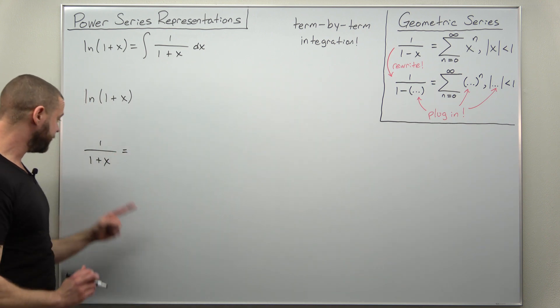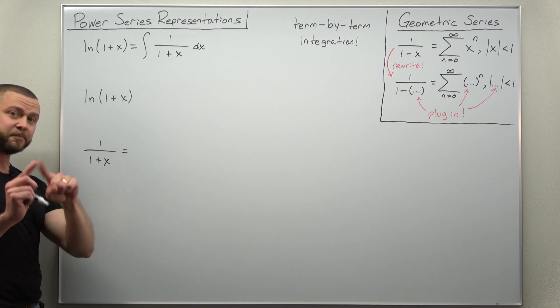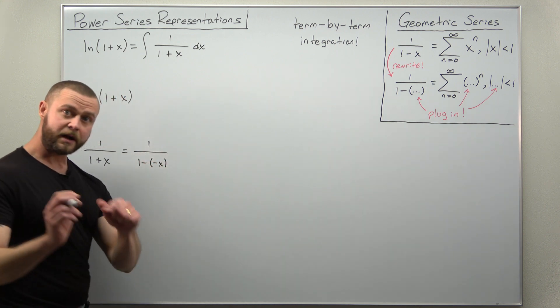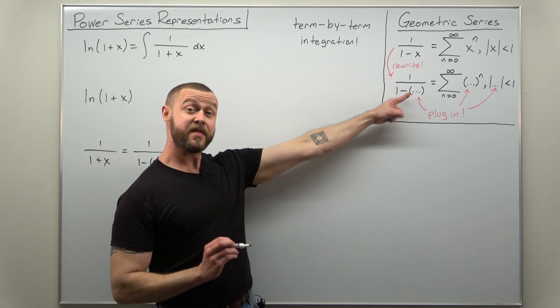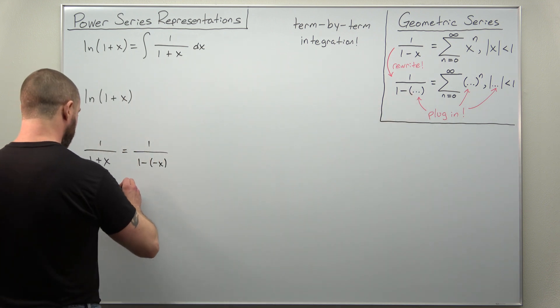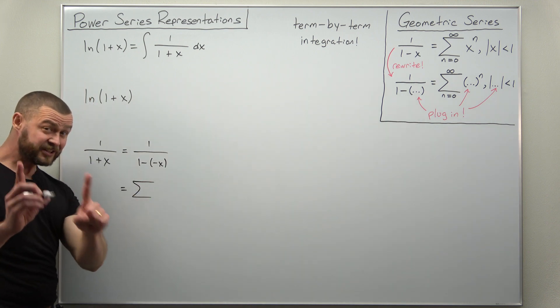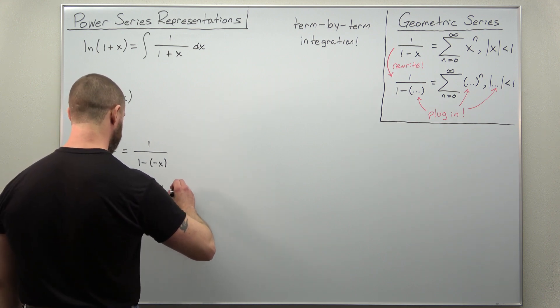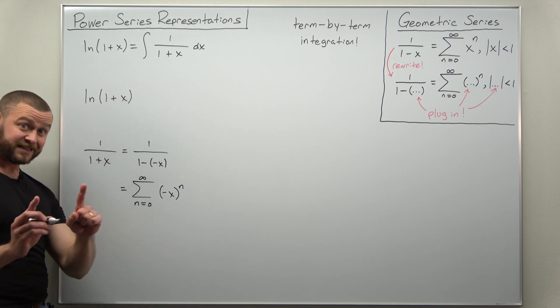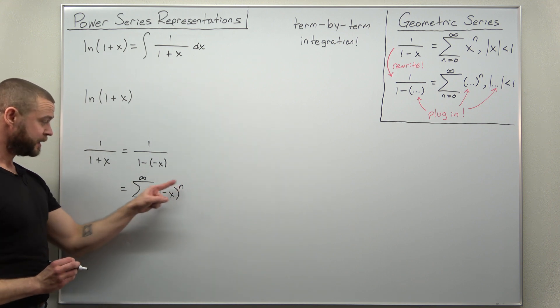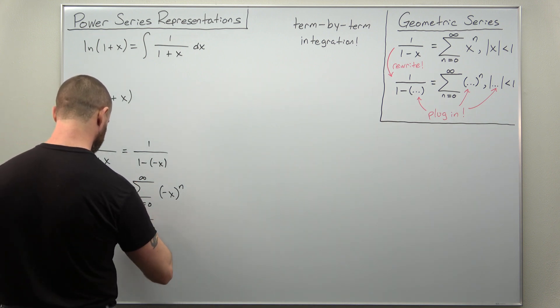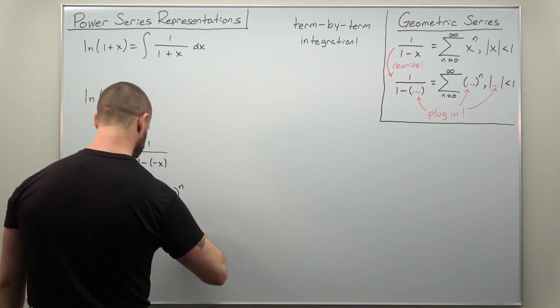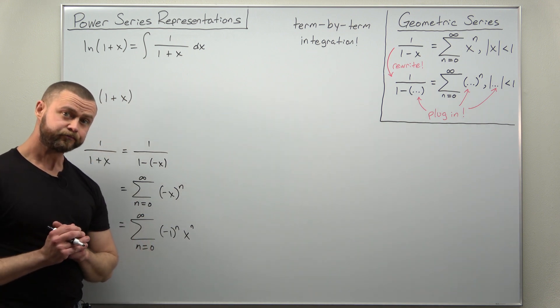We in fact did that as a previous problem. Rewrite that addition as minus a negative. And now you can just make a replacement. Replace in there with negative x and you'll get your power series which we're going to integrate term by term. The sum goes from 0 to infinity. We have negative x to the n. And you'll definitely want to simplify this to make the term-by-term integration easier. Take the nth power of each of those and you'll get the sum from 0 to infinity of negative 1 to the n times x to the n.